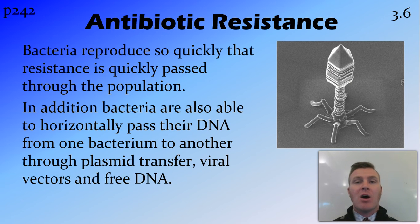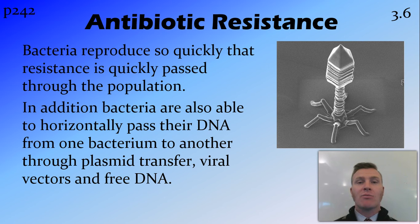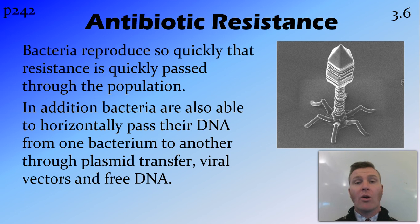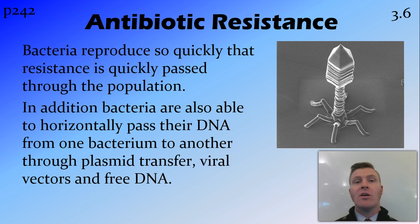Antibiotic resistance spreads so quickly across a population because bacteria reproduce very, very quickly, passing the resistance gene to offspring rapidly. But in addition to this, bacteria can also pass resistance genes between individuals of the same generation through what's called horizontal transfer. This can occur through plasmid transfer, where two bacteria rub up against each other and swap a little bit of DNA.